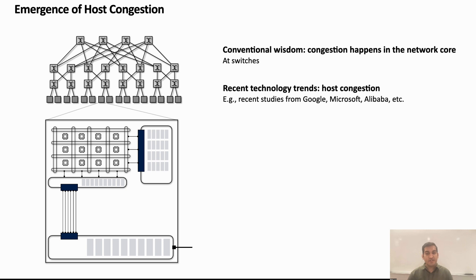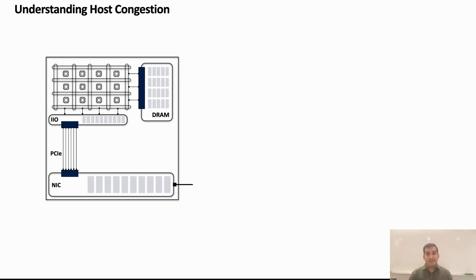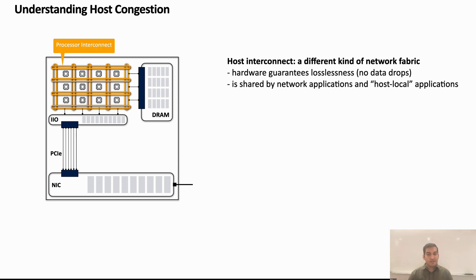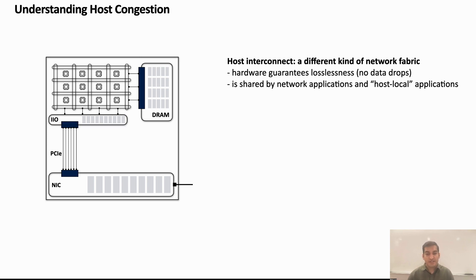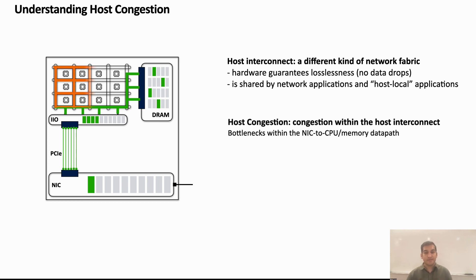To understand host congestion, we need to understand the host interconnect. Today's host interconnect has three main components. CPUs exchange information among themselves and send read or write requests to DRAM via processor interconnect. Next, NICs send read or write requests to CPUs and to DRAM via peripheral interconnect. Memory interconnect, specifically a memory controller, intercepts read or write requests from CPUs and from NICs and executes them on DRAM. Importantly, peripheral interconnect connects to processor and memory interconnect using an integrated IO controller known as IIOs. The host interconnect has two interesting properties: first, the hardware guarantees lossless data transfer using a hop-by-hop credit-based mechanism; second, it is shared by both network and host local applications. Importantly, network applications use congestion control, but host applications do not.